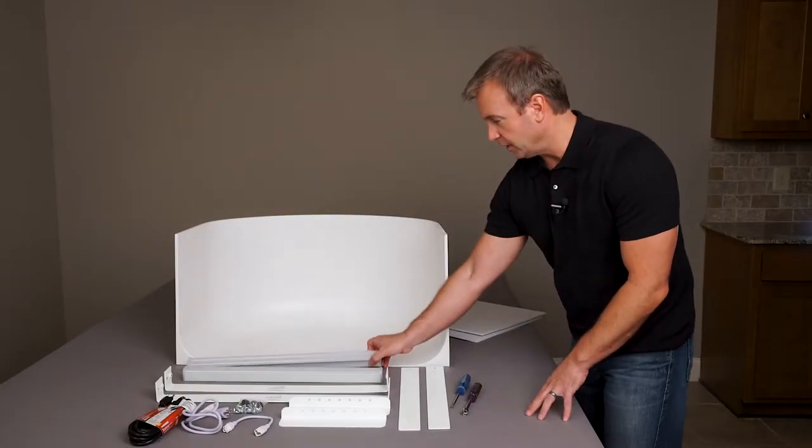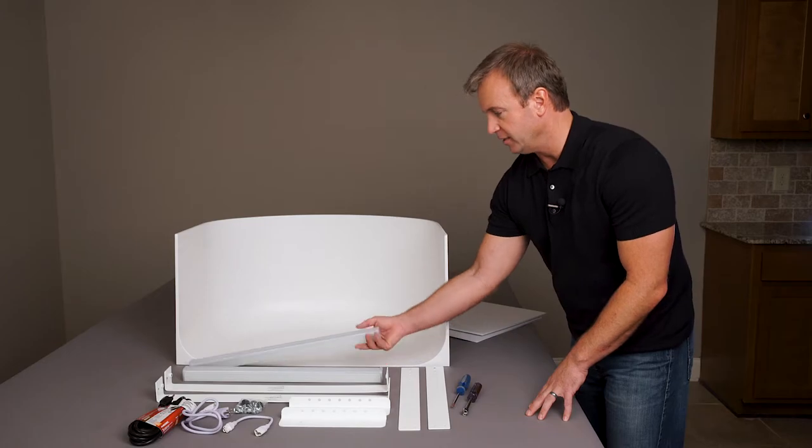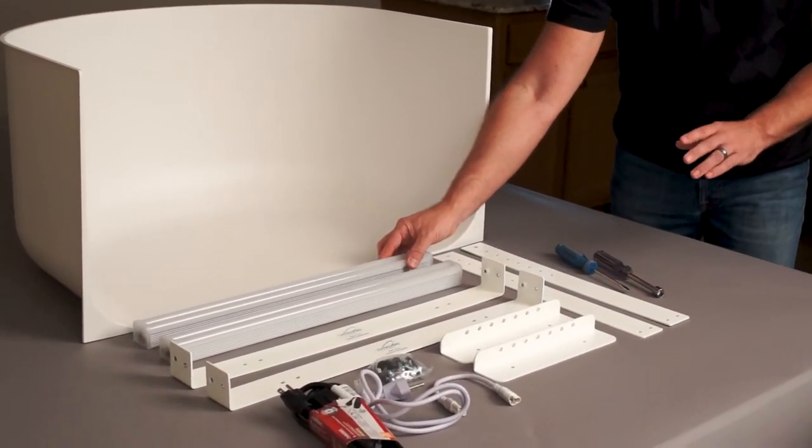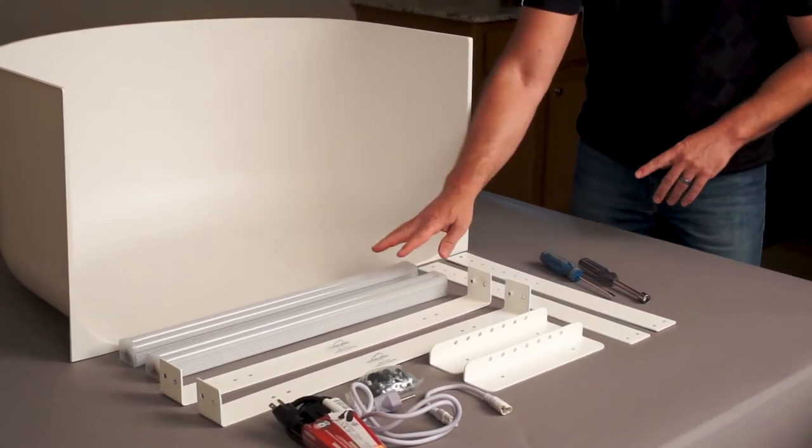And besides the background, we've got two LED lights. These are ultra-bright, 5000K, so you get the daylight full-spectrum lighting, which is great for photography. So we've got two of those.